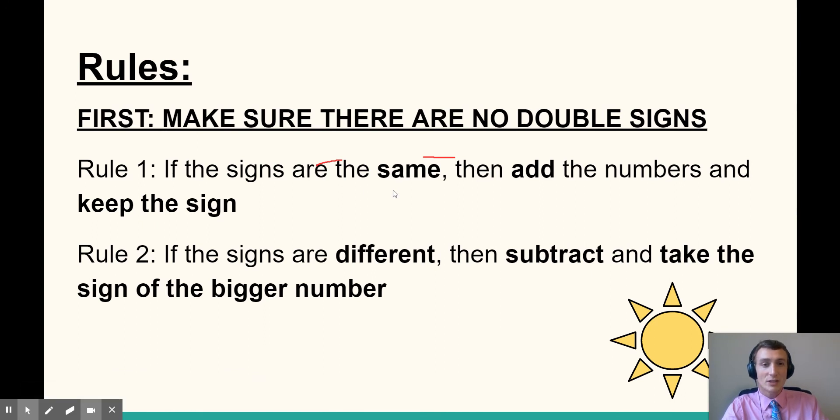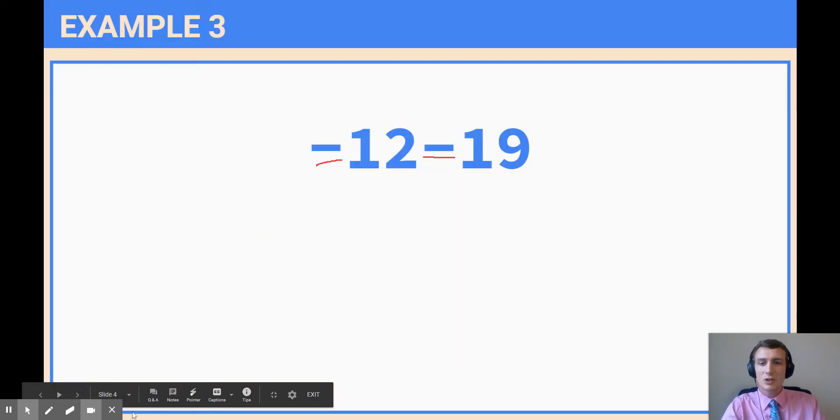If the signs are the same, then add and keep. Add and keep, y'all. Okay, let's do it. Let's go back to that problem. We're going to add these numbers and keep the sign. Easy as pi. 12 plus 19.